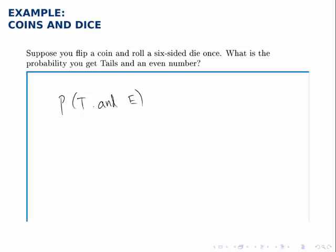When we're dealing with probability with and, if the two events are independent, the probability of one and the other occurring is the product of the individual probabilities.